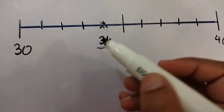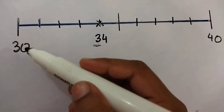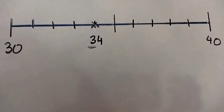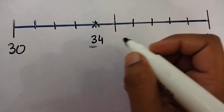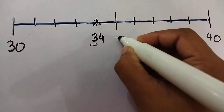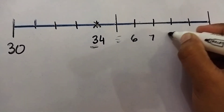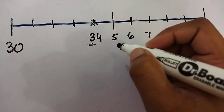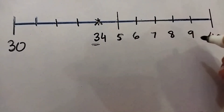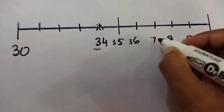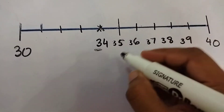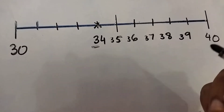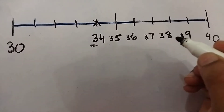Now we have to determine if we round off 34, will it become 30 or 40? We need to remember: if the number you are rounding is followed by 5, 6, 7, 8, or 9, we round the number up — it means the last figure kept should be increased by 1.